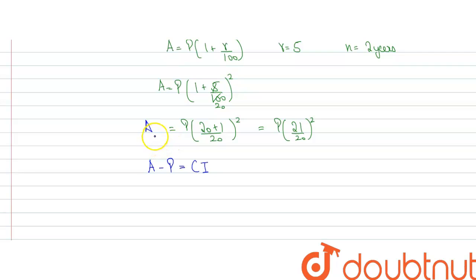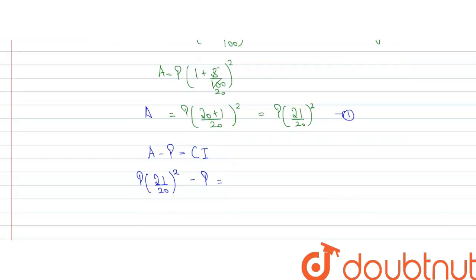As we know the value of amount from equation 1, we get amount value of amount is equal to P into 21 divided by 20 whole square minus P is equal to compound interest which is given to us as Rs 768.75.